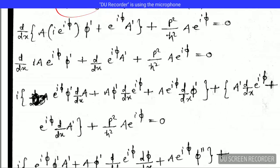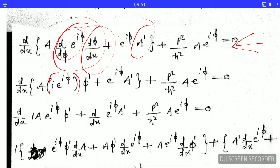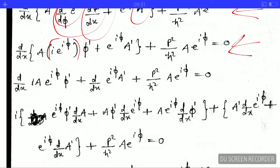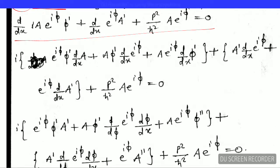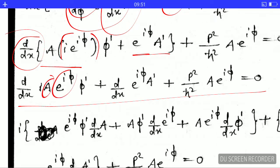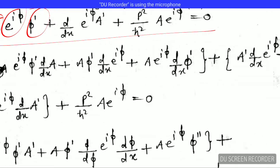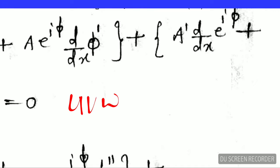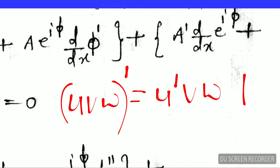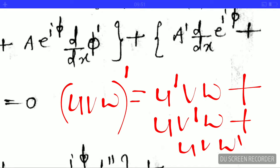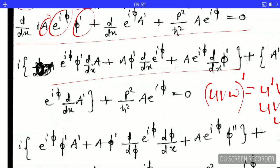This differentiation is represented by φ′. There are three functions of x — A, and two others — so we apply the product rule for three functions. If u, v, w are functions of x, the derivative of their product is u′vw + uv′w + uvw′. I apply that rule here.